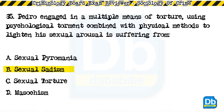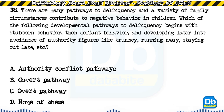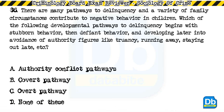Question 86: There are many pathways to delinquency and a variety of family circumstances contribute to negative behavior in children. Which of the following developmental pathways to delinquency begins with stubborn behavior, then defiant behavior, and develops later into avoidance of authority figures like truancy, running away, and staying out late? a) authority conflict pathways, b) covert pathway, c) overt pathway, d) none of these. The answer is A, authority conflict pathways.